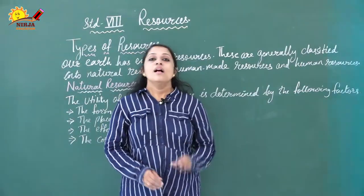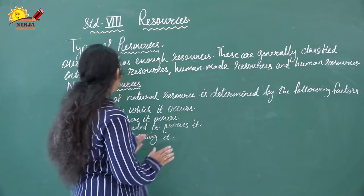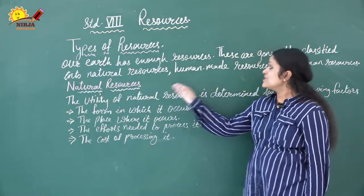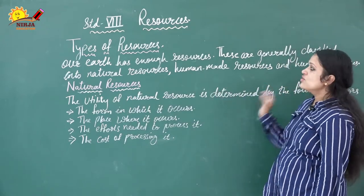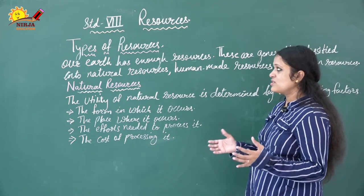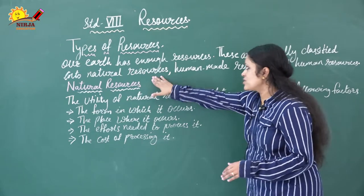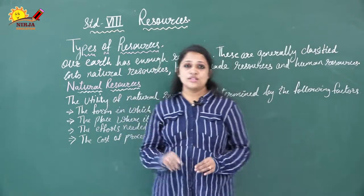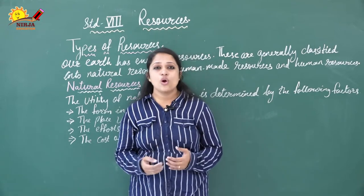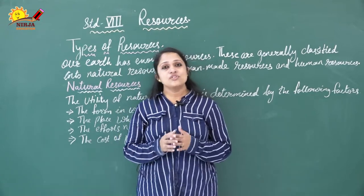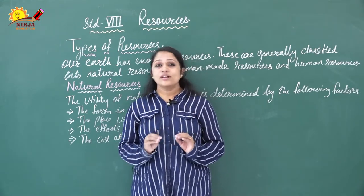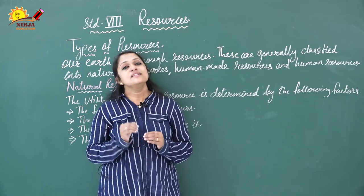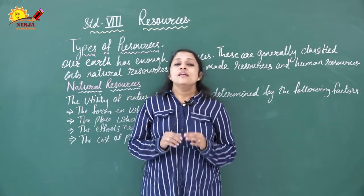Now we will talk about the types of resources. Our earth has enough resources, generally classified into natural resources, human-made resources, and human resources. Natural resources include land, air, water, soil, minerals, natural vegetation, and fossil fuels.